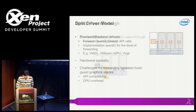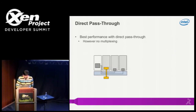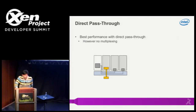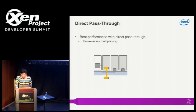Next is device passthrough. From a performance point of view, this is really good because it achieves almost native performance. But the problem is there is no multiplexing at all — you can only support one VM.